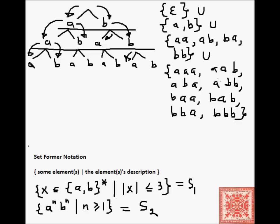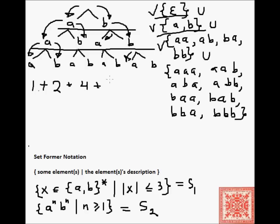How many strings are there in S1? We have one string of length 0, two strings of length 1 (a and b), four strings of length 2, and eight strings of length 3. So it's 1 plus 2 plus 4 plus 8, which is 7 plus 8, giving us 15 strings. S1 has cardinality 15.